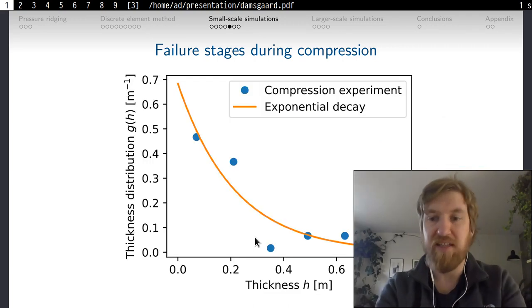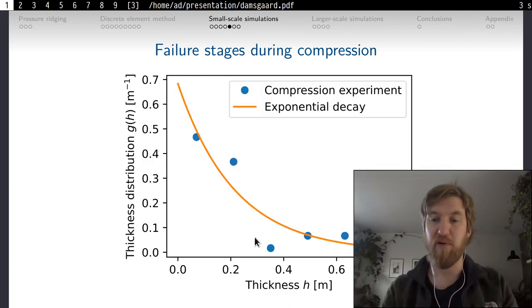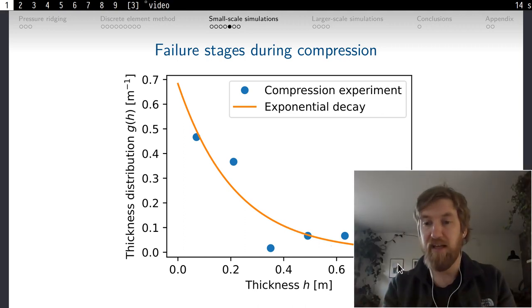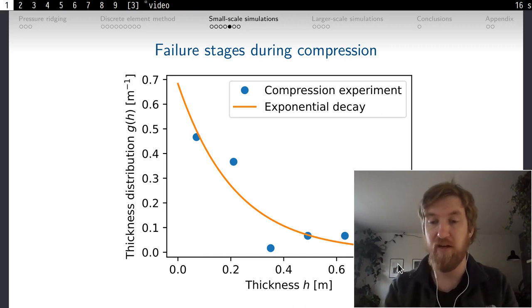We can also assess the thickness distribution across some of these experiments. And we can see that the thickness distribution follows this exponential decay with increasing thickness. And this exponential decay is known from measurements on the ice pack thickness of, for example, the Arctic sea ice.